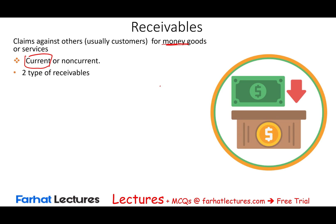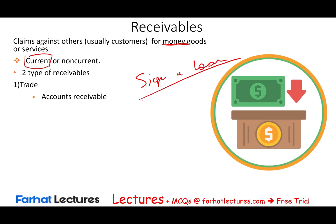We have two types of receivables. First, trade receivables: as a result of providing goods or services — you sold your product to a customer — and here what we have is accounts receivable. Sometimes when you sell goods or services, you make the customer sign a loan, so you are essentially a lender. You provided the service and lent the money at the same time, giving you a trade notes receivable.